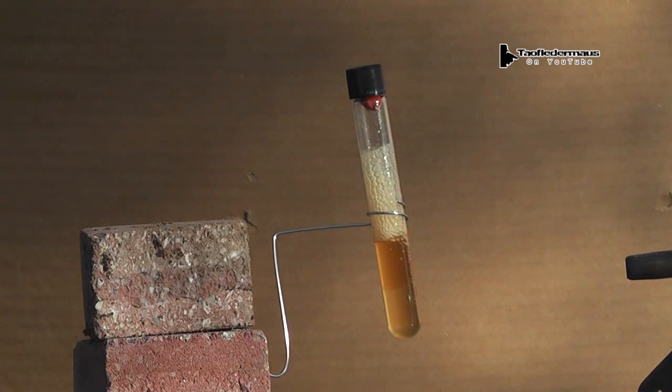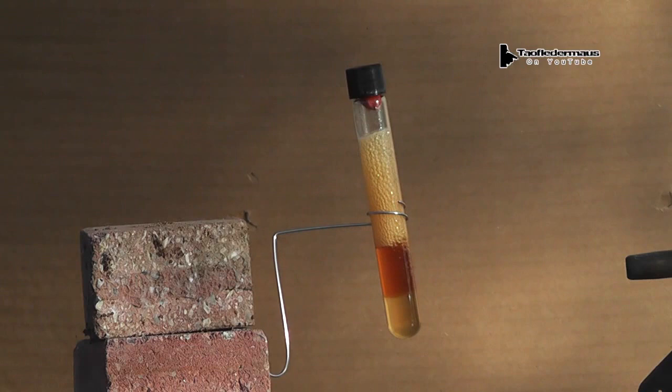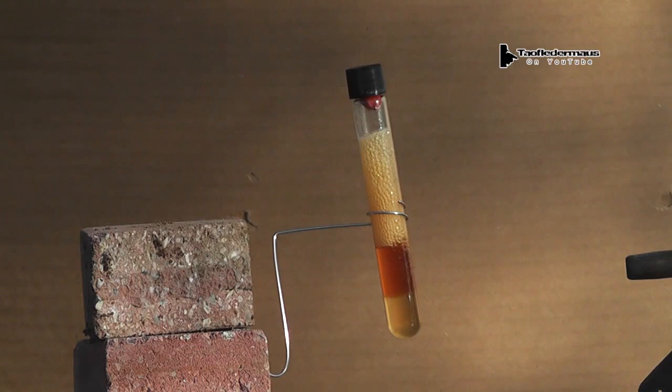Honey is made up of a lot of complex sugars. The sugars it includes are fructose, glucose, maltose, sucrose, and it has a percentage of water, usually around 15 to 20%, I believe.